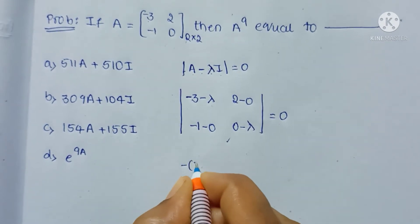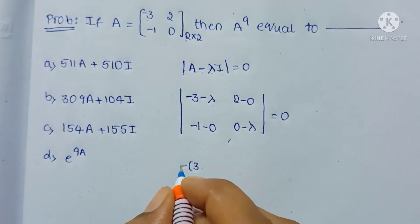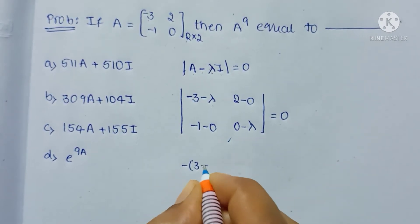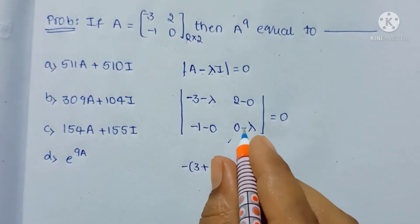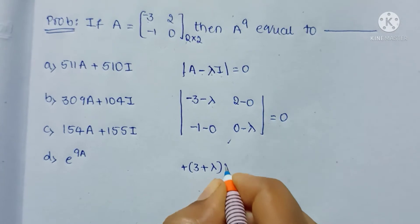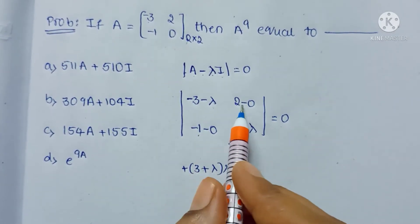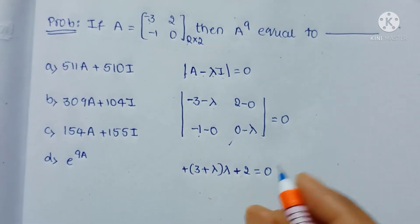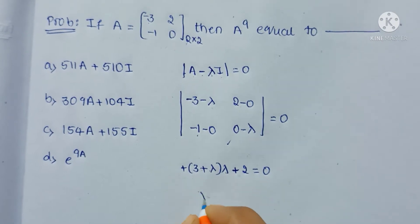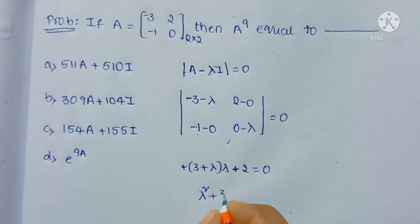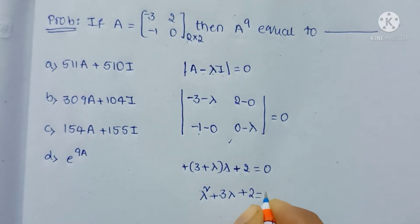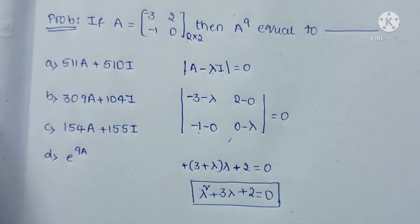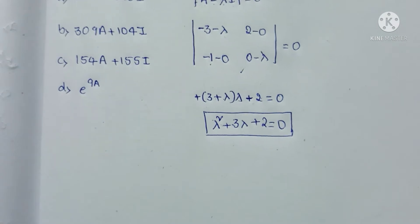Taking minus as common, we get minus of (3 plus lambda) into (minus lambda), and here minus 1 into 2 gives minus 2. Expanding, we get lambda squared plus 3 lambda plus 2 equal to 0. This is the characteristic equation, and by using it we can find the value of A power 9.